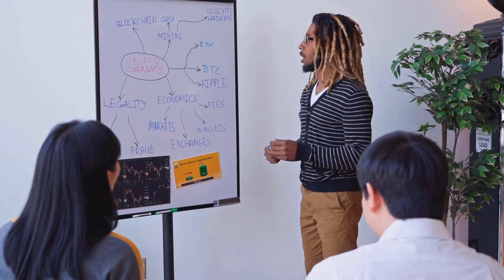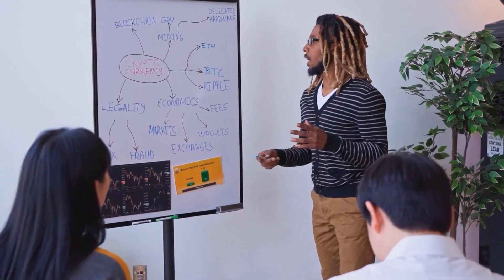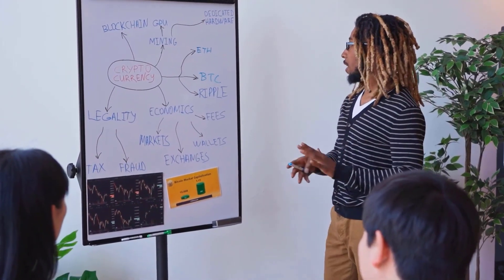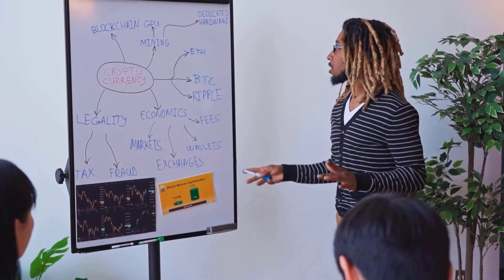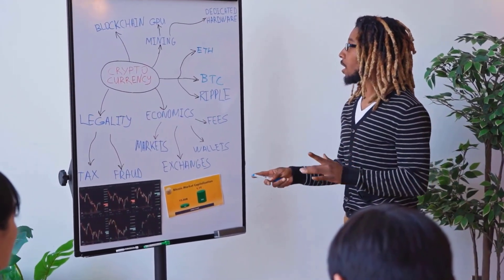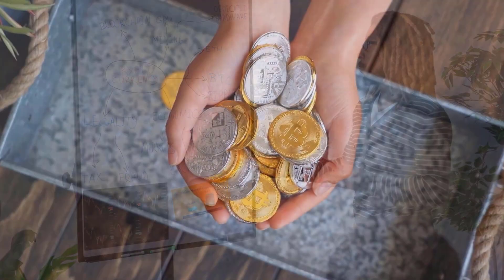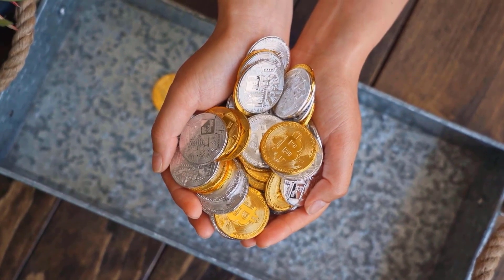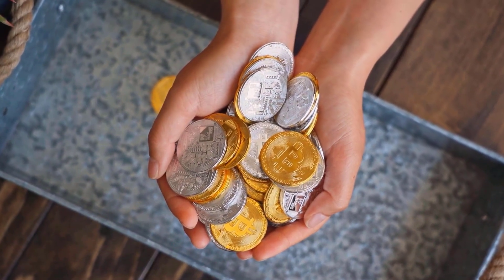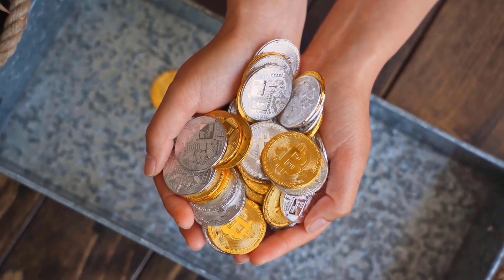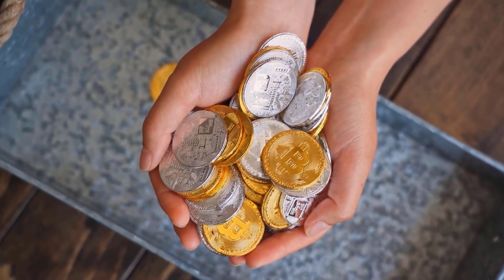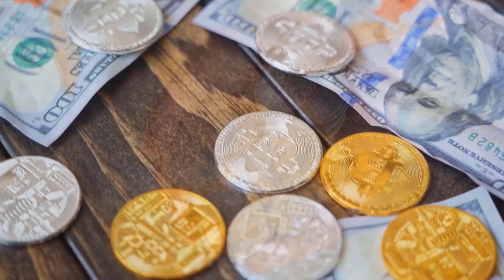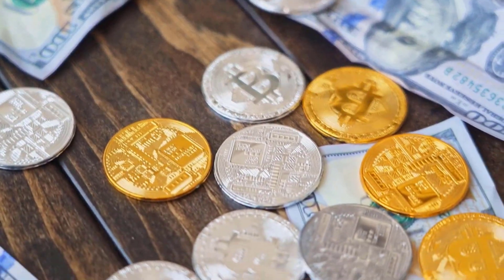Algorand cost expectation on Thursday, June 8: cost 2.31 rands, high 2.47, low 2.15. Algorand conjecture on Friday, June 9: cost 2.36 rands, high 2.53, low 2.19.